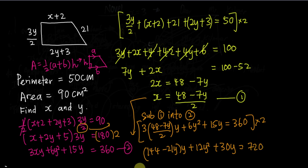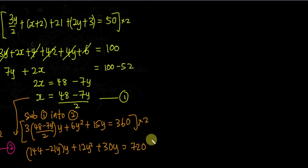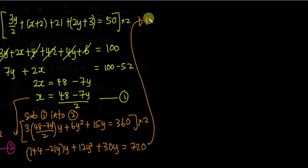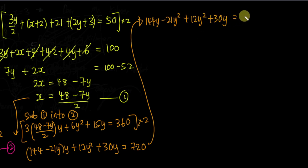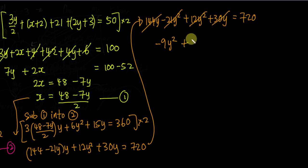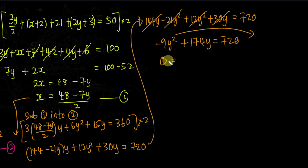With more space, I simplify further. Multiplying y in: 144y minus 21y squared plus 12y squared plus 30y equals 720. Collecting y squared terms: negative 21 + 12 = negative 9y squared. Collecting y terms: 144 + 30 = 174y. So: negative 9y squared plus 174y equals 720. I want the y squared term positive, so I move everything to the other side: 9y squared minus 174y plus 720 equals 0.